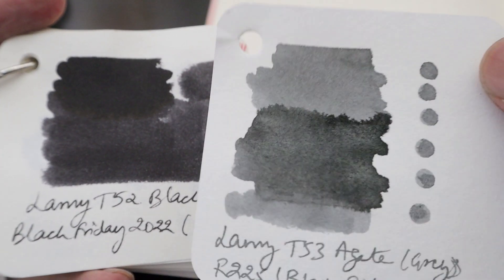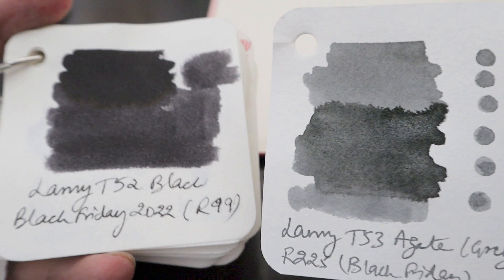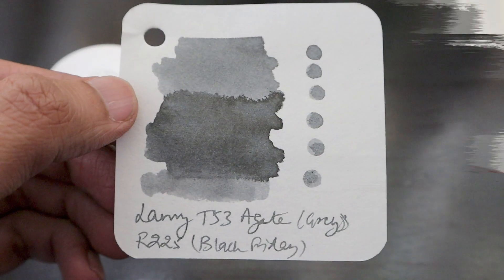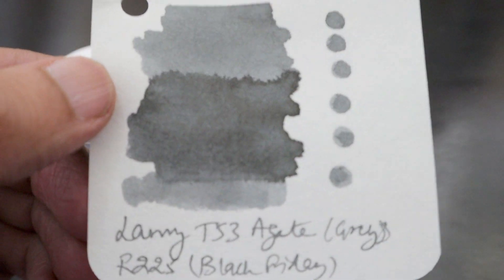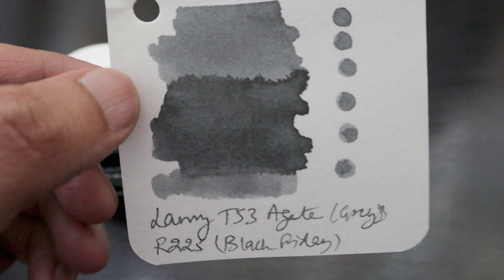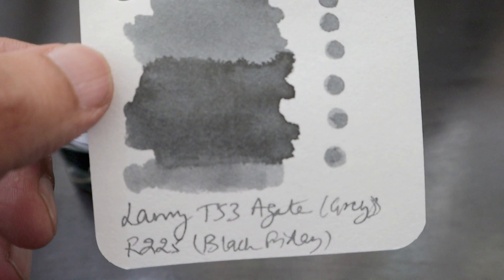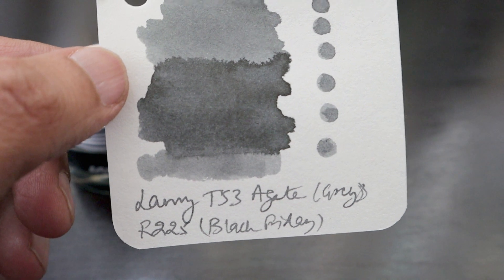Meanwhile, this is still getting dried. Once it dries, I'll definitely show you once again. Friends, finally this is how the ink looks like—a really silvery, blackish kind of gray ink from Lamy T53 Agate series, which is a Crystal Ink series.